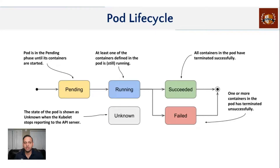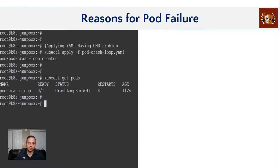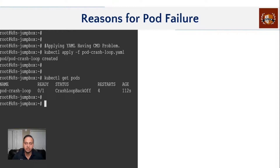We're most interested in understanding what a failed status means — why a pod would actually fail, and if it does fail in a cluster with multiple pods, what happens next. Will the other pods get the traffic? There is a general misconception that Kubernetes handles everything automatically, pods will always be running, and we don't need to do any pod failover testing. But that's not actually true — pods can have failures, pods can crash, and there are many reasons why that happens.